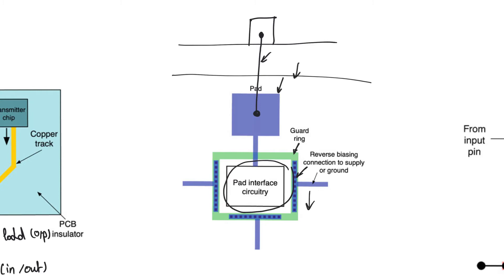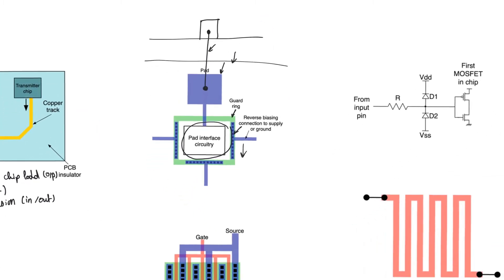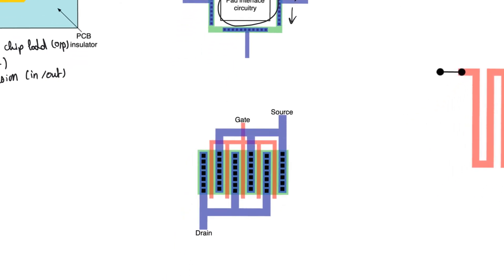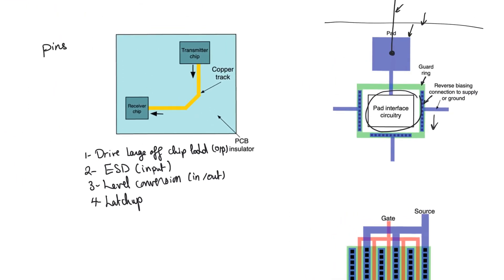Reducing guard ring contact resistance helps reduce the chance of latch-up. We are particularly worried about latch-up in pin pads because of the large currents they carry, which can lead to large supply and ground bounces, leading to latch-up. For output pins, we also have to provide drive for the off-chip capacitance. The transmitter chip has to drive the capacitance of the copper PCB track, which is very wide — necessary to keep it low resistance. Because it is wide, it has large capacitance, and therefore requires a very large CMOS buffer driver.